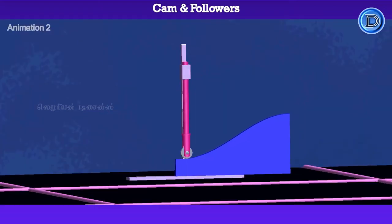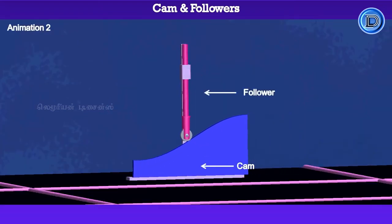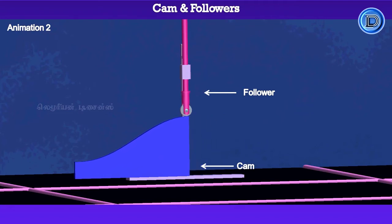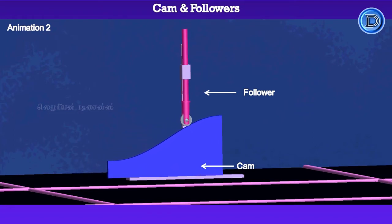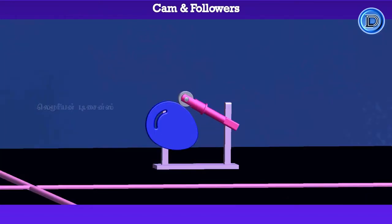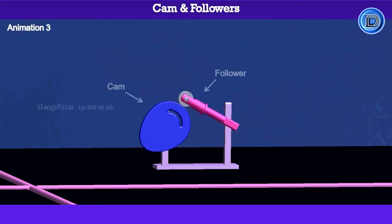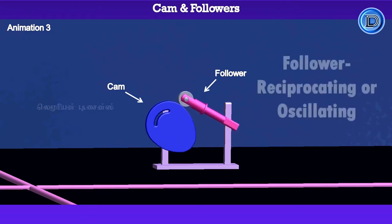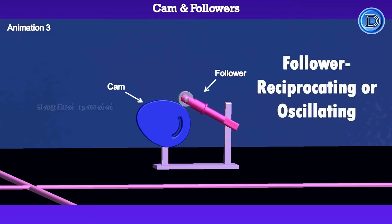See the next animation. Here the driver is a reciprocating element, and it makes the follower to reciprocate. So the Cam may be a rotating or reciprocating element. See animation 3 — here the Cam gives oscillating motion to the Follower. So the follower may be a reciprocating or oscillating element.